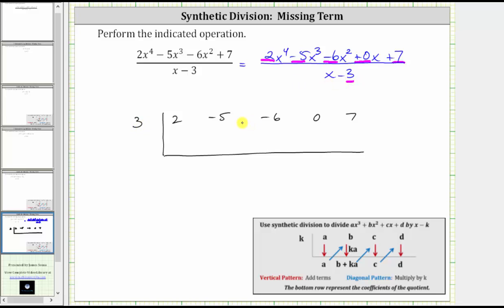And now to complete the table and perform synthetic division, the vertical pattern is to add the terms, the diagonal pattern is to multiply by k. So to begin, we bring the two down. And now the diagonal pattern is to multiply by k, which gives us two times three, which is six. And then we add vertically. Negative five plus six is positive one.